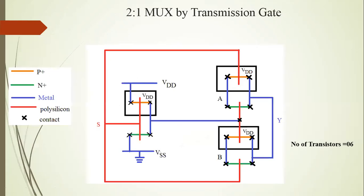This is the layout of the 2-to-1 MUX using transmission gates. The materials used are: P-plus material, N-plus material, metal, polysilicon, and a cross sign. This N-MOS contains P-plus material. This is one transmission gate, and this is another transmission gate. The blue line here means metal.